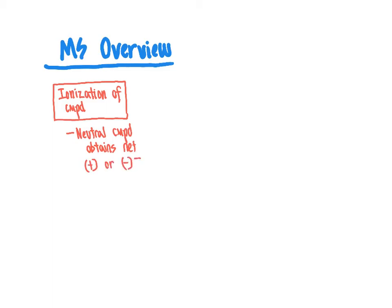We call detecting positive formal charges positive ionization mode, and negative formal charges negative ionization mode. These are the two modes in which organic molecules can be detected. For some classes of molecules it will be more advantageous to use positive ionization mode; for others, negative ionization mode is preferred. Compounds that very easily lose a proton — such as carboxylic acids — form negative formal charges easily and are well-suited for negative ionization mode.